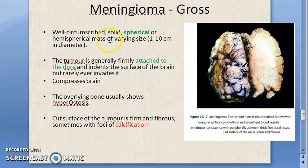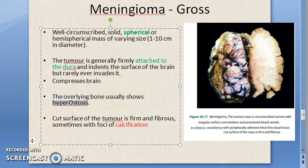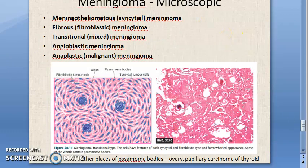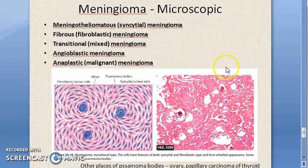Gross: spherical, well circumscribed solid mass attached to dura, compressing the brain, and the overlying bone shows hyperostosis. The cut surface shows firm fibrous tissue with foci of calcification - it is firm because of the fibrous and calcified nature. In the next video we will continue with the microscopy.